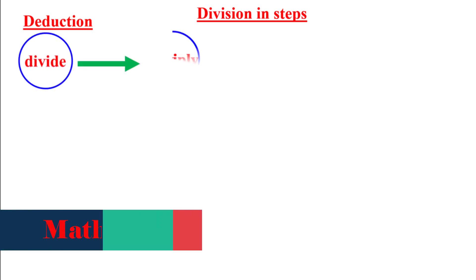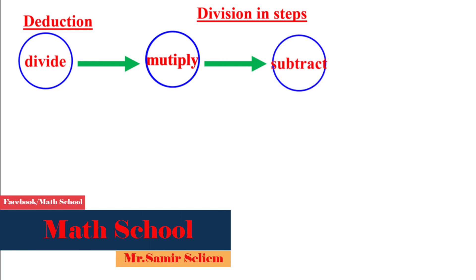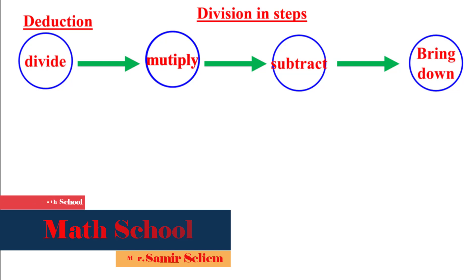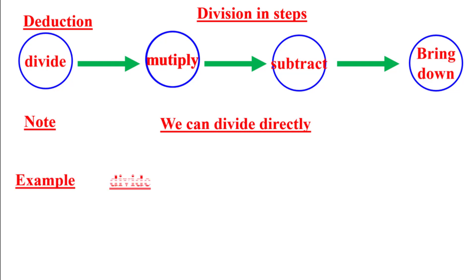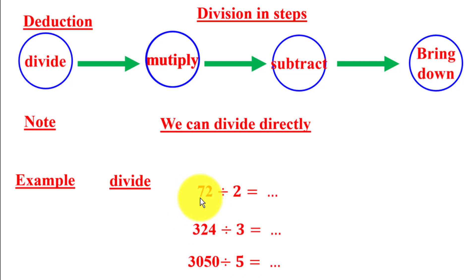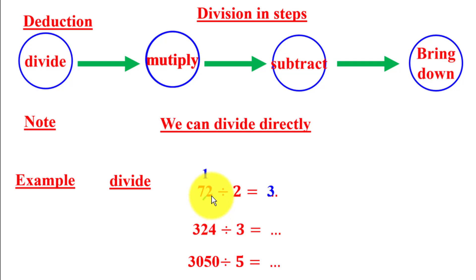Now we can deduce the steps of division: first step is divide, followed by multiply, followed by subtract, followed by bring down the next digit, and repeat. We can also divide directly without long division. For example, 72 divided by 2: 7 divided by 2 — 3 times 2 equals 6, write 3 and the remainder is 1. Write 1 beside 2 to get 12: 12 divided by 2 equals 6. Quotient is 36.